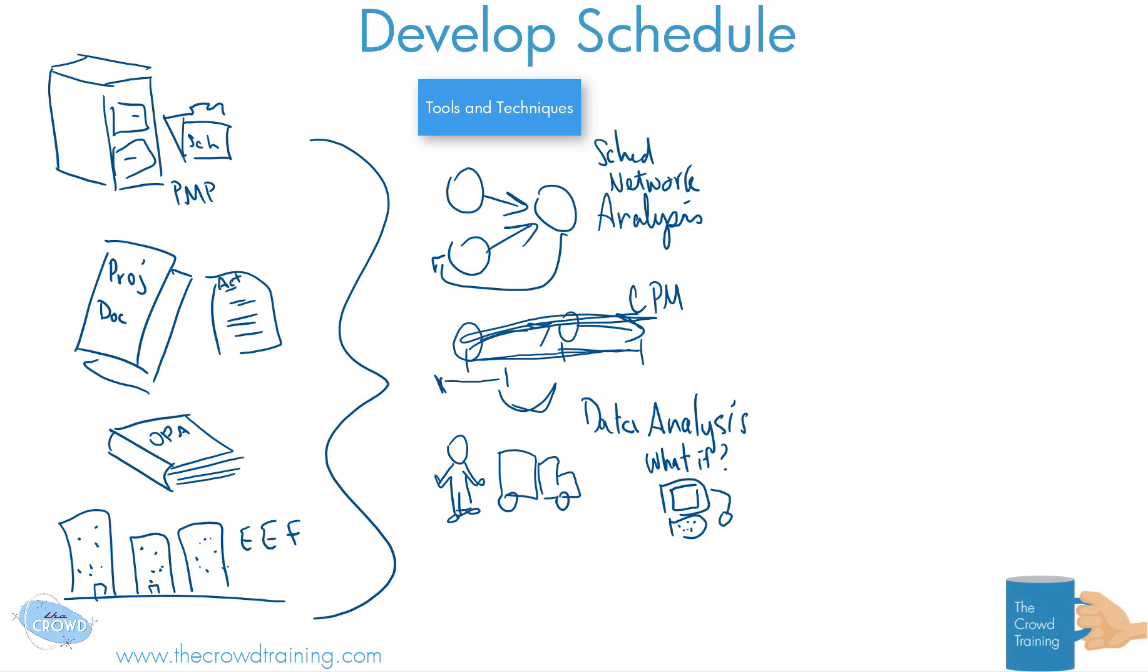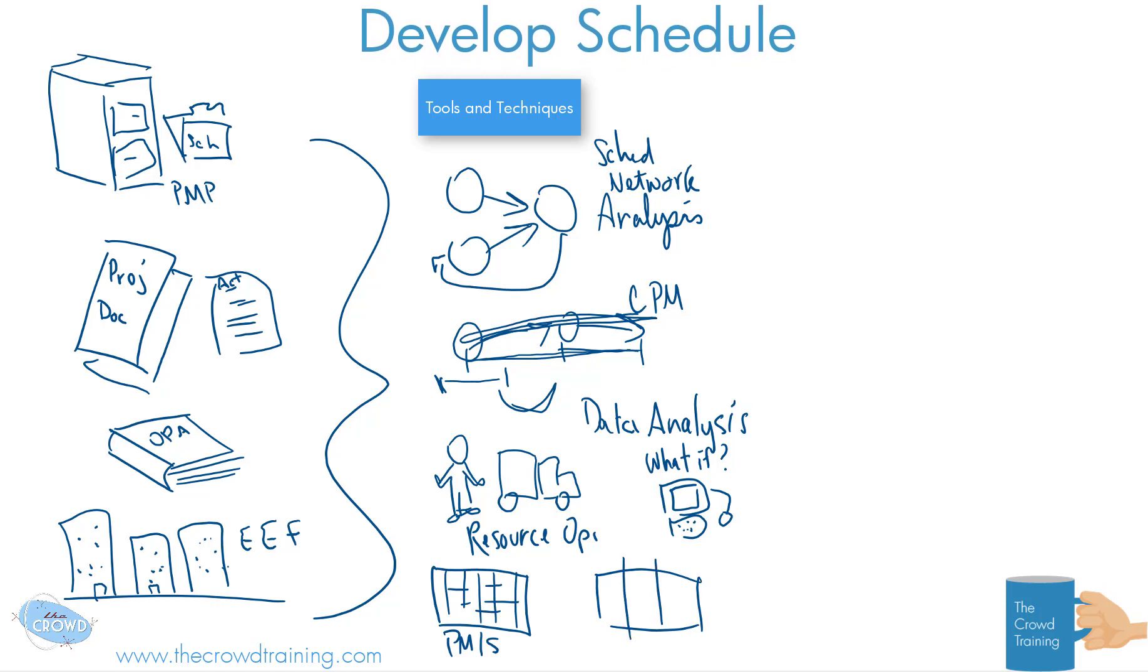We have different tools like Microsoft Project and all those kinds of things that are going to help us use and fit and create our different techniques. That's our project management information systems, those softwares that we might have. Then also, you can try to use agile planning. There are many different ways that agile planning works that's going to help us run sprints or iterations and backlogs.